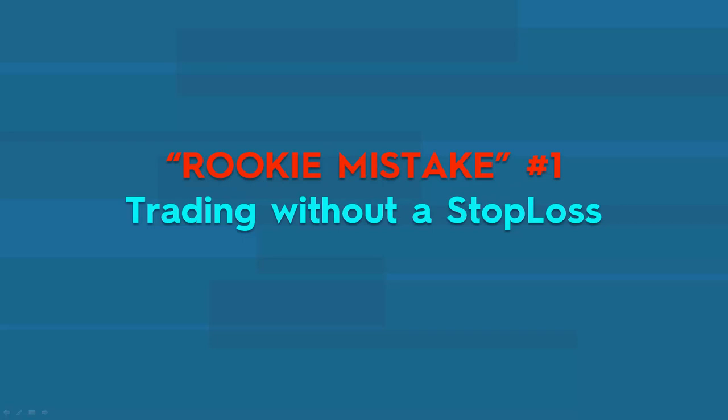Rookie mistake number one: trading without a stop loss. By far the biggest and most frequent mistake. If you ever enter into a position on the foreign exchange market, your position should have a stop loss. If your position doesn't have a stop loss, you're basically asking for trouble — the loss is not limited on your account. It doesn't matter how confident you are that the market will go up or down; there is still always a possibility for the market to go in the opposite direction. Without a stop loss you are risking losing everything in a split second.